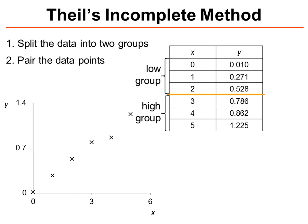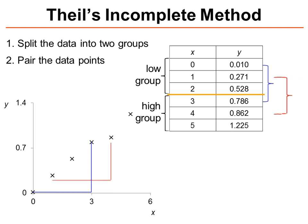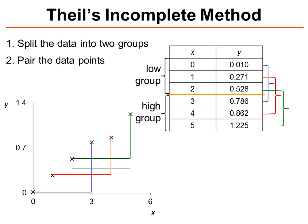We then need to pair the data points between these two groups. So we take the first data point in the low group and the first data point in the high group. Then we do that with the second point in the low group and the second point in the high group, and finally we do it for the third point in each group.